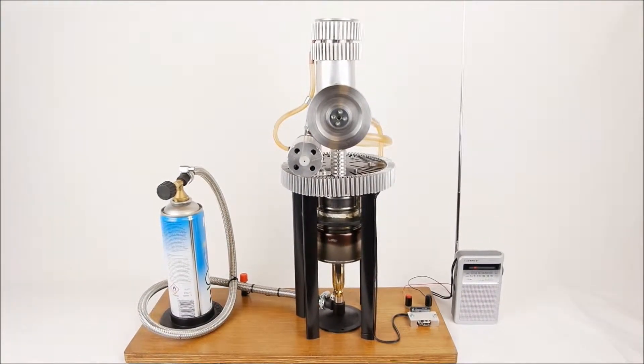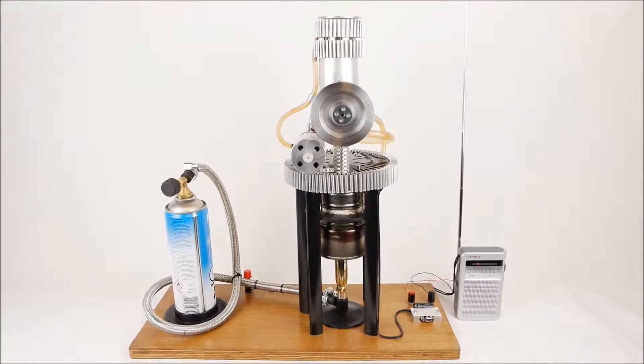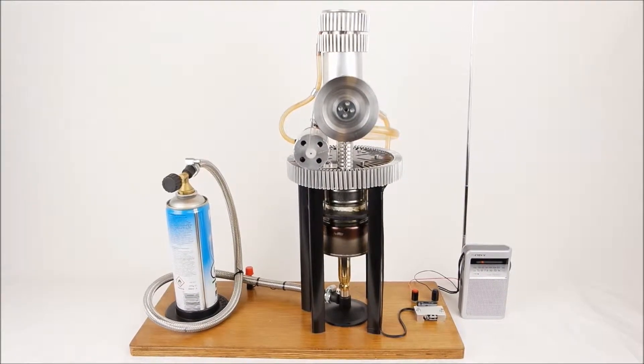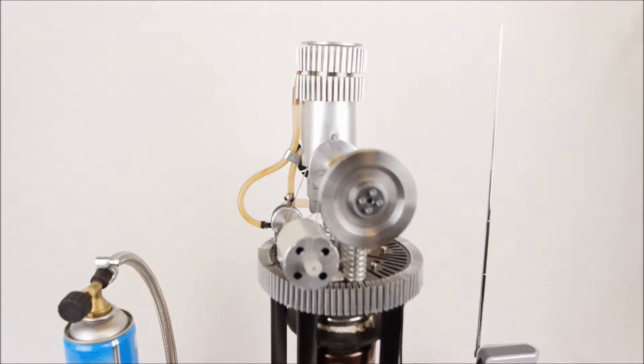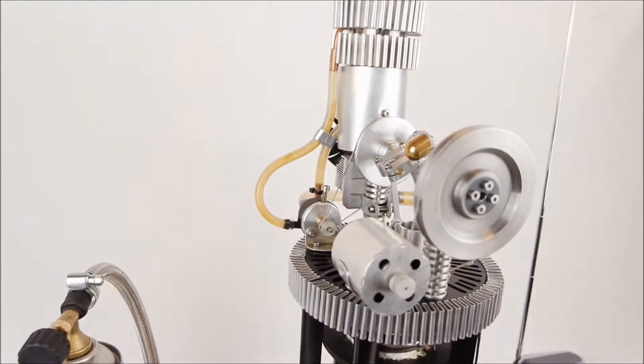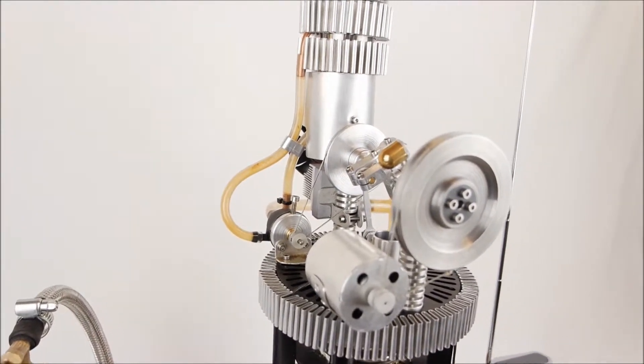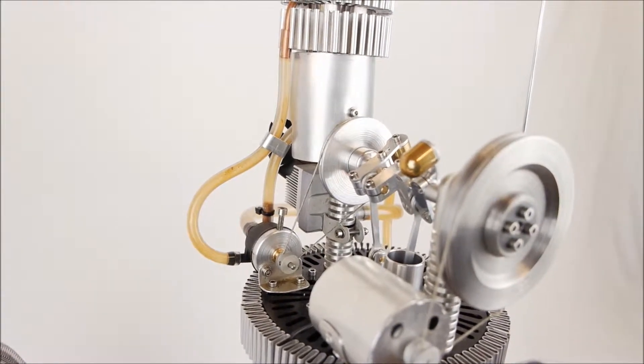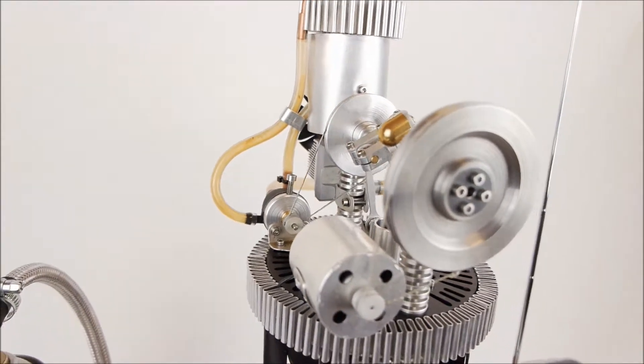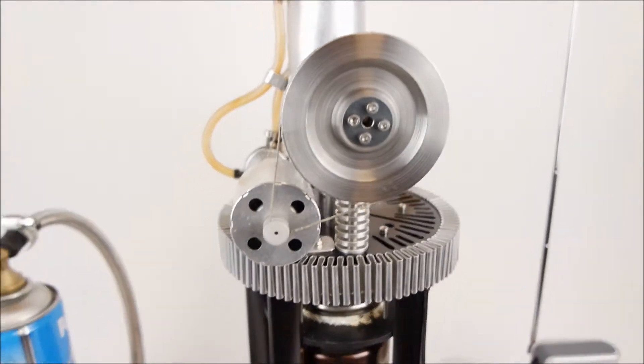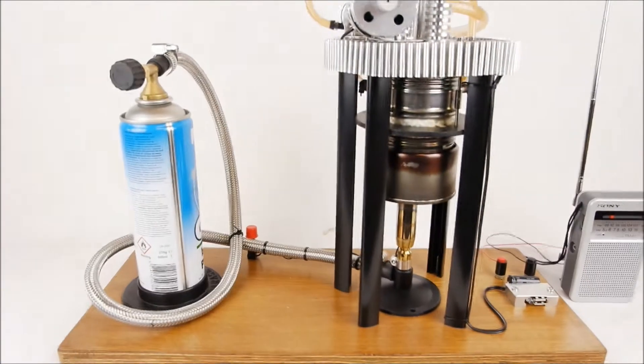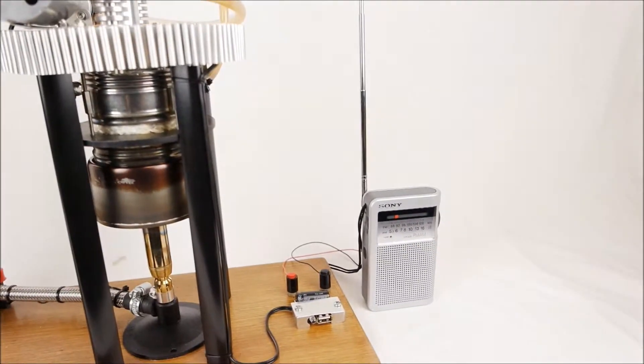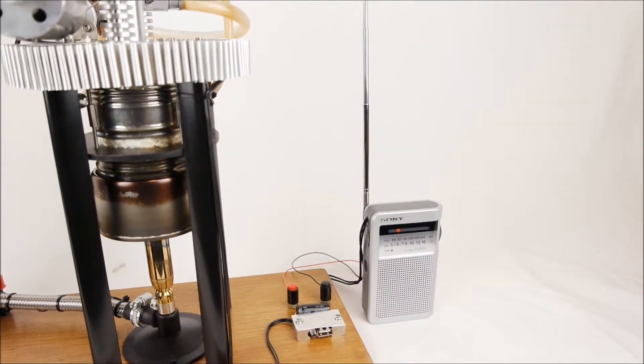This video demonstrates a Stirling engine powering a radio using a small DC generator. This Stirling engine is a modified Warp 5 stove fan engine which has been modified with a generator and a small water pump. It's designed for continuous operation. It's running off propane and uses a very small amount of propane while powering a small transistorized radio.